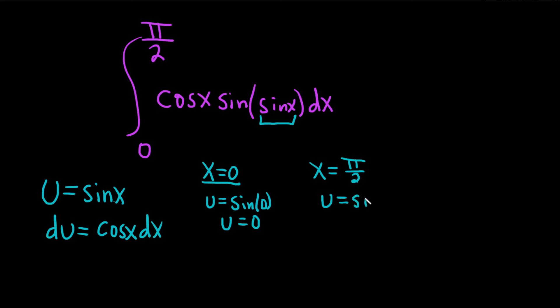So u is equal to the sine of pi over 2, which is actually 1. If you think about the unit circle, pi over 2 is right here and sine is the y coordinate on the unit circle, so the sine of pi over 2 is 1.